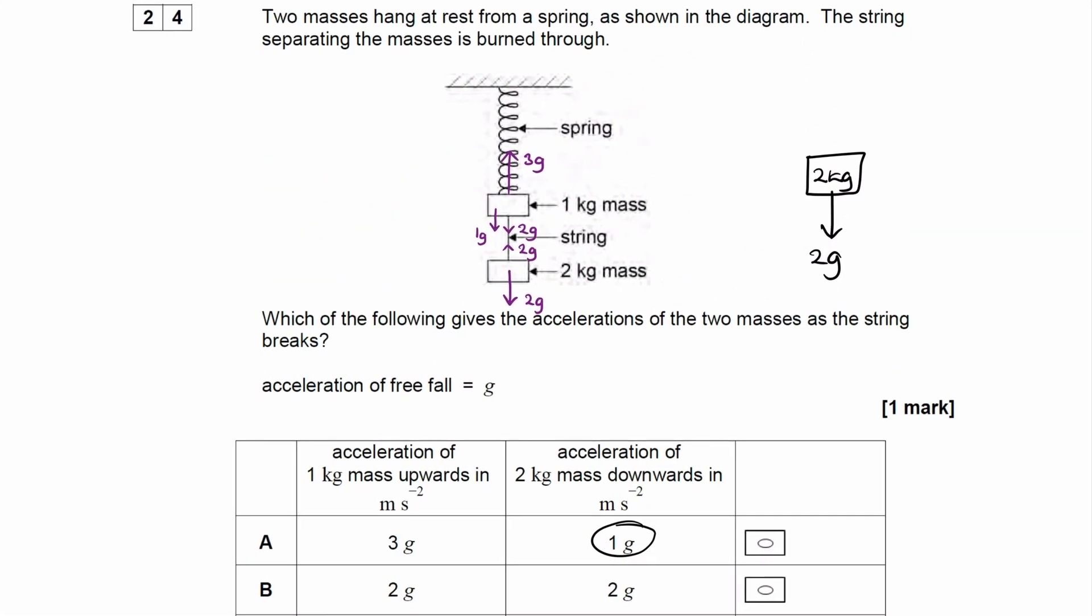And then for the 1kg mass, the force of 2g downwards, that force goes away, as there is no more tension in the string. So then for the 1kg mass, we have a downward force of weight, and immediately after the string breaks, the spring is still extended by the same amount. And therefore the upward force in the spring will still be 3g, the instant after the string breaks.